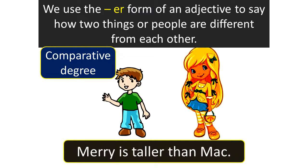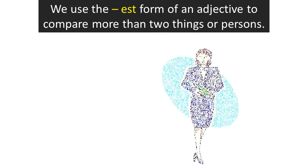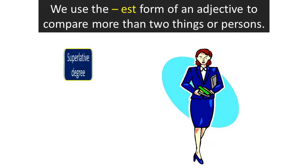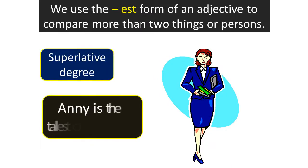We use the '-est' form of an adjective to compare more than two things. This is the superlative degree. For example: Annie is the tallest of all.